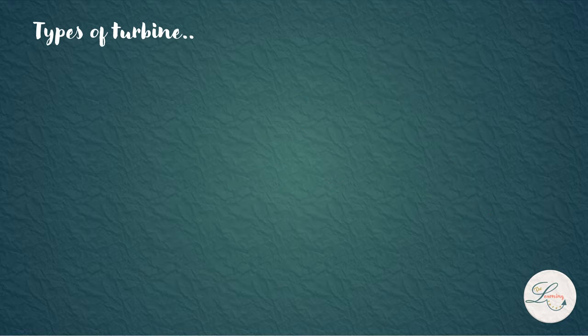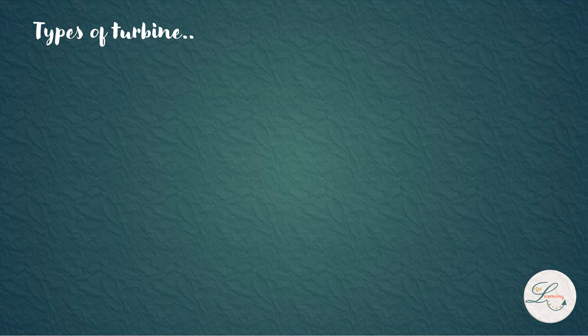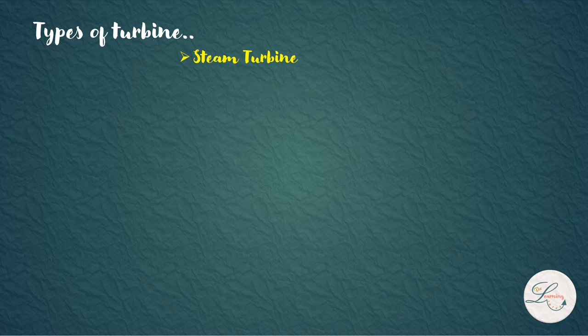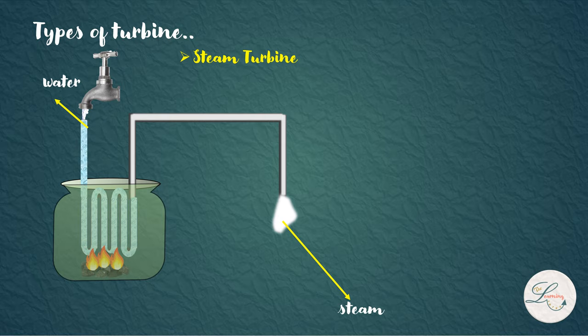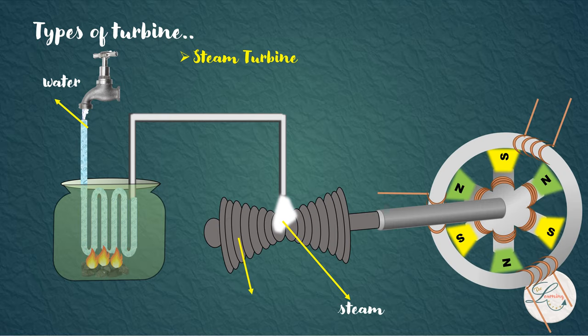The types of turbines used in power plants are steam turbine, hydraulic turbine, and wind turbine. The turbine which uses steam as its input is called steam turbine. Fuels like coal, natural gas, biomass, and uranium are used to heat water until it produces steam. Then this steam is given as the input to the steam turbine.